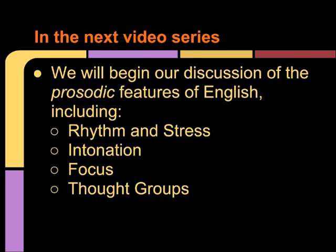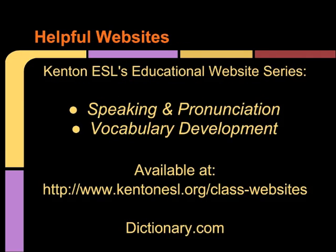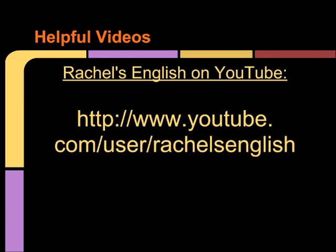In our next video series, we will begin our discussion of the prosodic features of English, including rhythm and stress, intonation, focus, and thought groups. I encourage you to visit the Kenton ESL educational website series on speaking, pronunciation, and vocabulary development, and also to use dictionary.com — an excellent resource that includes pronunciations, IPA spellings, definitions, and word origins. I would also encourage you to check out other videos on YouTube to help with pronunciation, especially Rachel's English, which is an excellent video series teaching the individual sounds of English.